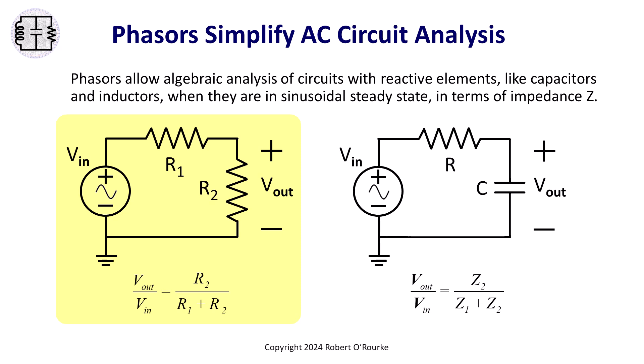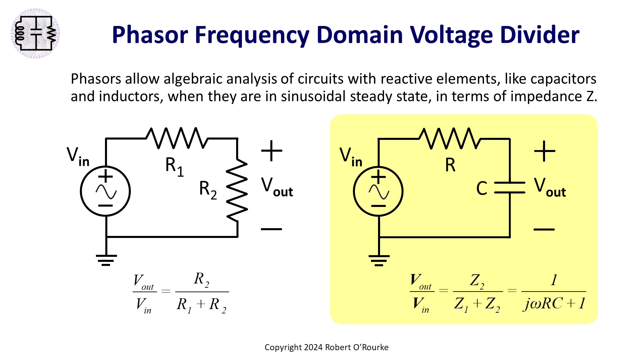This applies to all types of voltages in the time and frequency domains. The low-pass filter circuit on the right has one reactive element, a capacitor. For sinusoidal steady-state, phasors allow a similar voltage divider derivation of the frequency domain transfer function Vout over Vin, which is frequency-dependent.